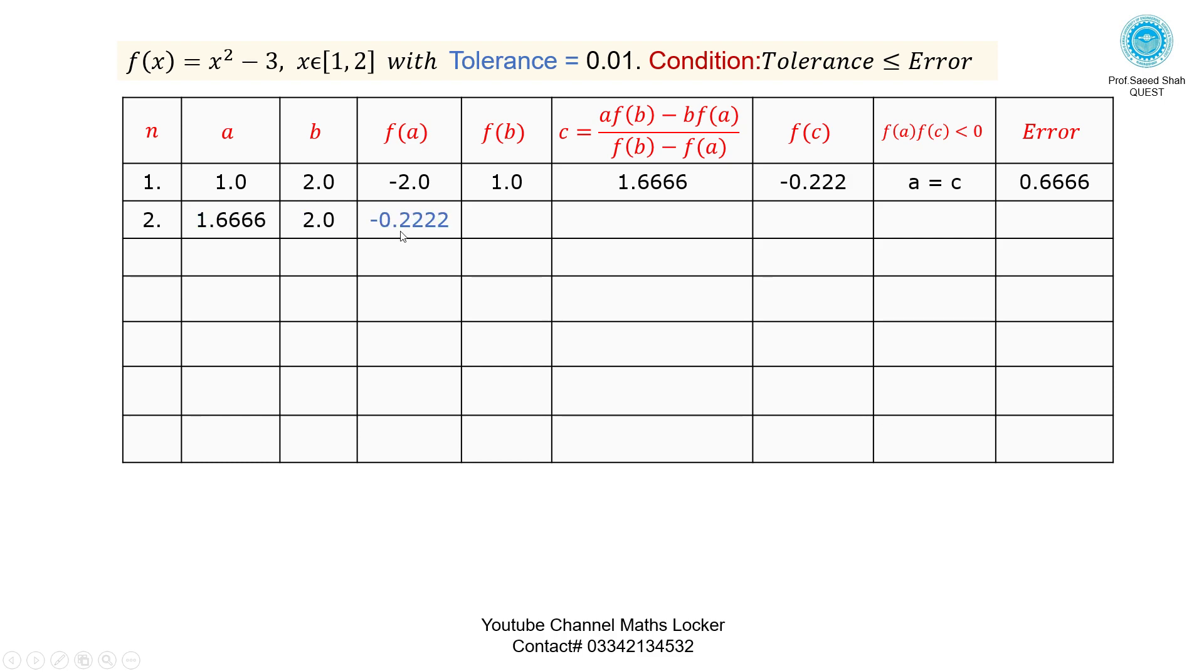F of A is negative 0.222. F of B is 1. Using this formula, placing the values A times F of B minus B times F of A divided by F of B minus F of A, we get the answer 1.7272. For F of 1.7272, we get 2.983 minus 3 equals negative 0.016. Check the condition: F of A with F of C is positive.